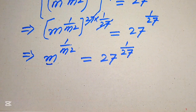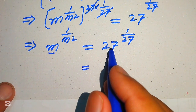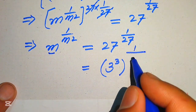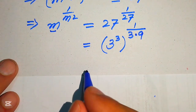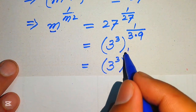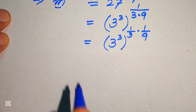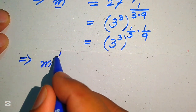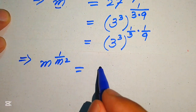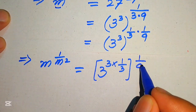To achieve this, we work on the right hand side. We write the base 27 as 3 cubed. The exponent is 1 over 27, and we write 27 as 3 times 9, so 1 over 27 becomes 1 over 3 times 1 over 9. We then move 1 over 3 inside the term, giving 3 to the power of 3 times 1 over 3, whole exponent 1 over 9.